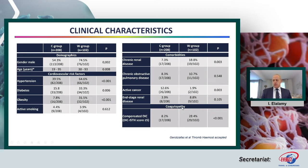Regarding coagulopathy evaluated through the DIC ISTH score — which is well known — over five points, you see that already more than 8% of patients in the conventional group had compensated DIC, but this frequency was three times higher in the worsening group. So the storm is there.